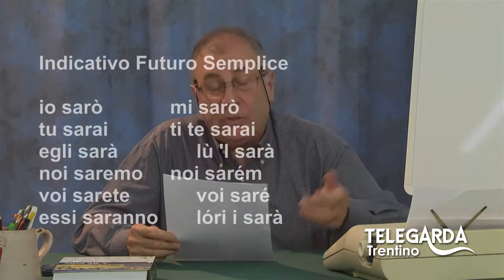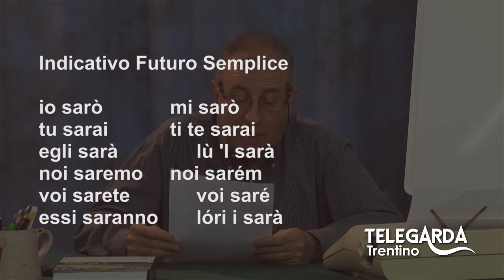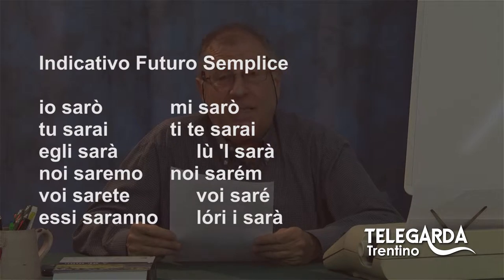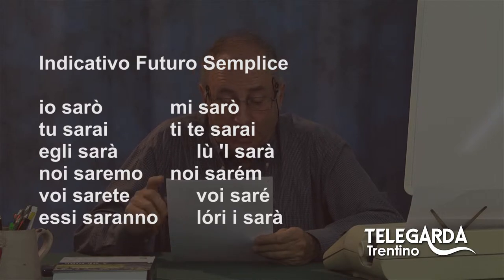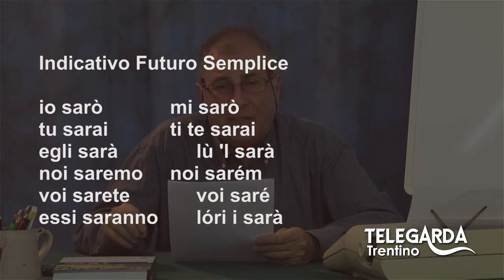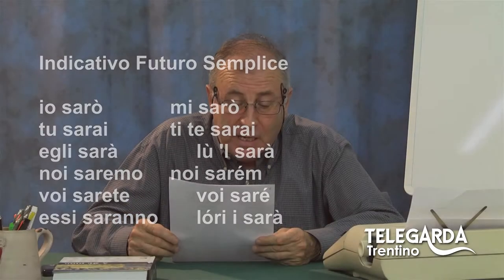Andiamo adesso al futuro semplice, che poi c'è il futuro anteriore. Io sarò, tu sarai, egli sarà, noi saremo, voi sarete, essi saranno. In dialetto: mi sarò, ti te sarai, l'ul sarà, attenzione: l'ul sarà, cade la e con l'apostrofo. Noi saremm, con un bel accento fonico chiuso sulla e. Voi sarei, sempre accento fonico chiuso. L'ori i sarà.